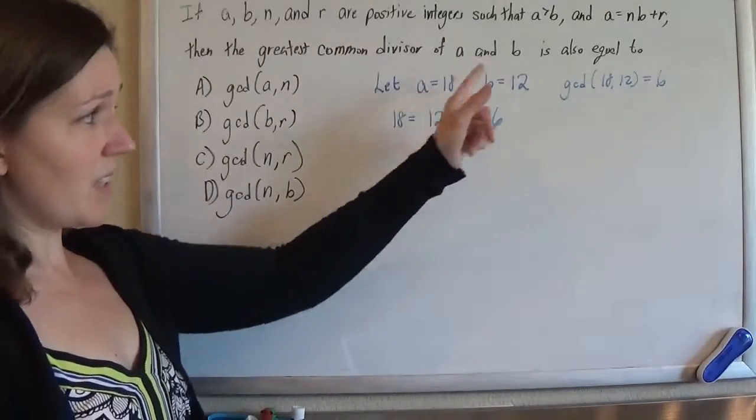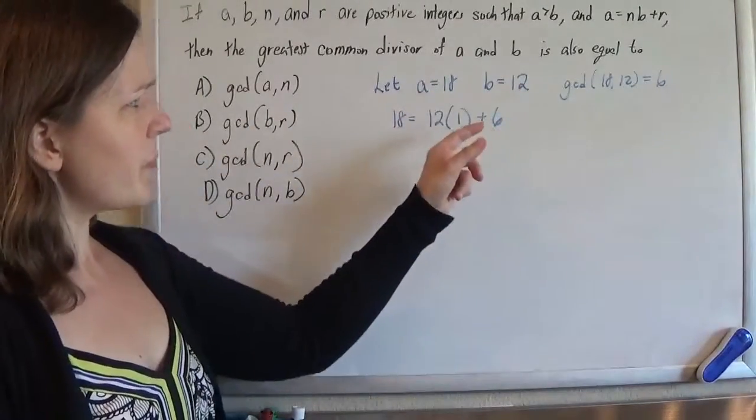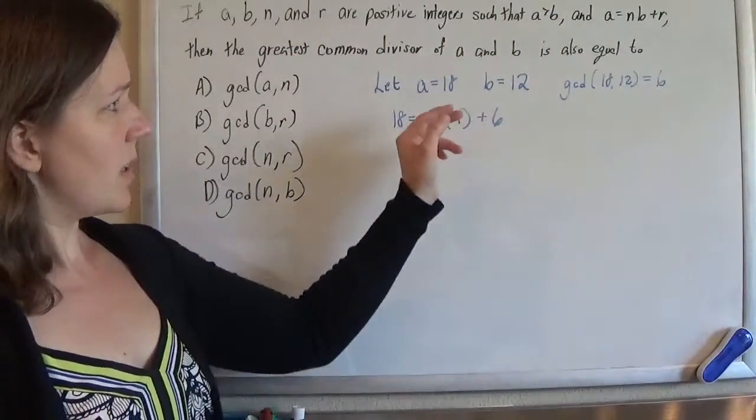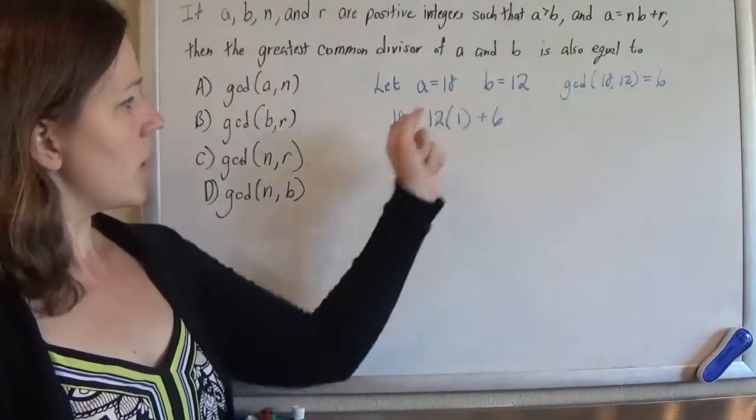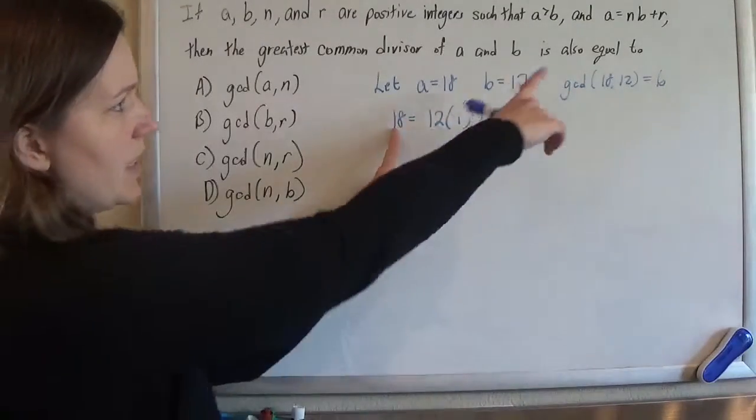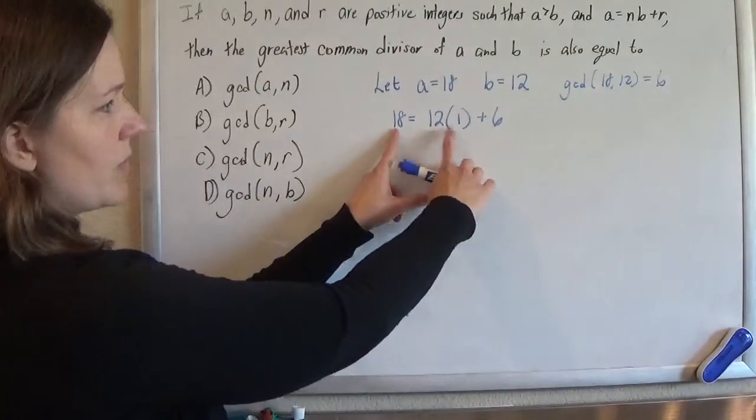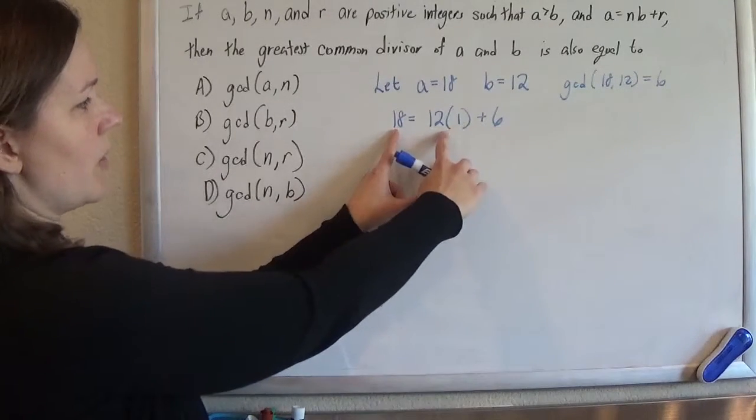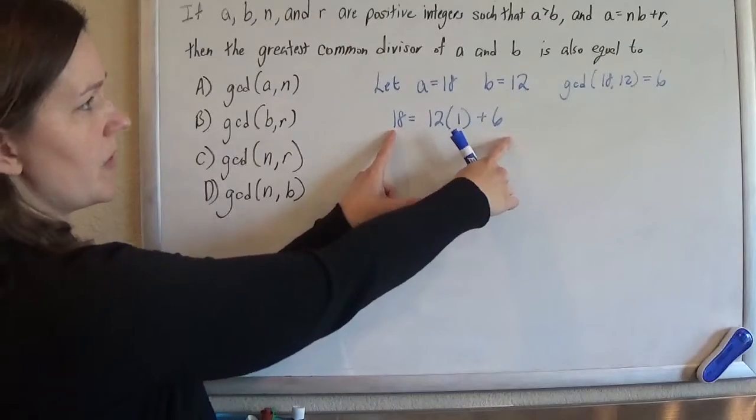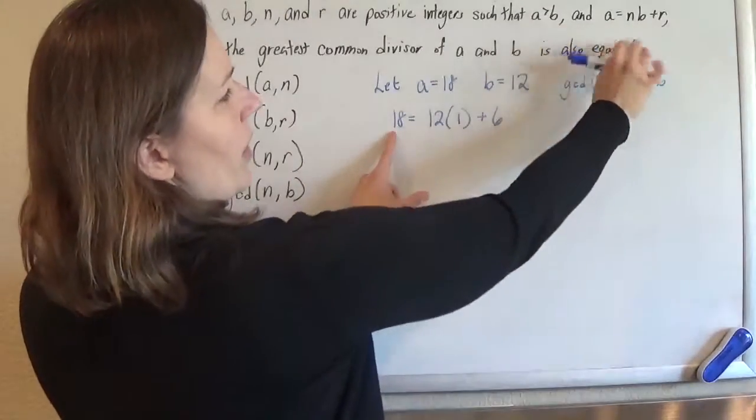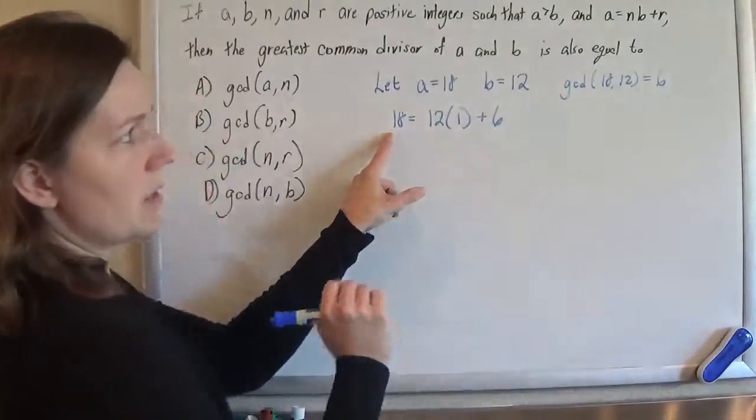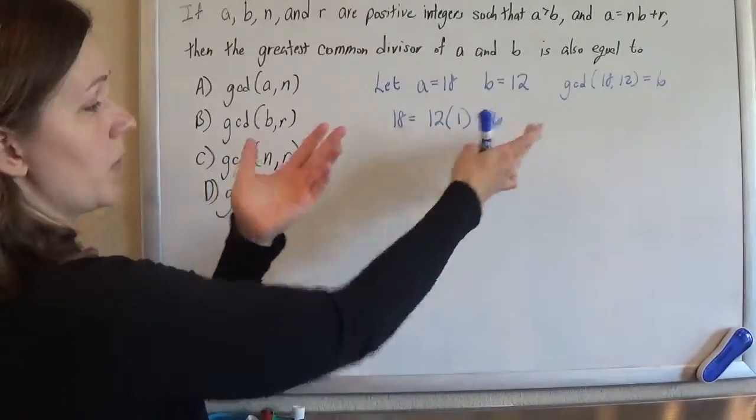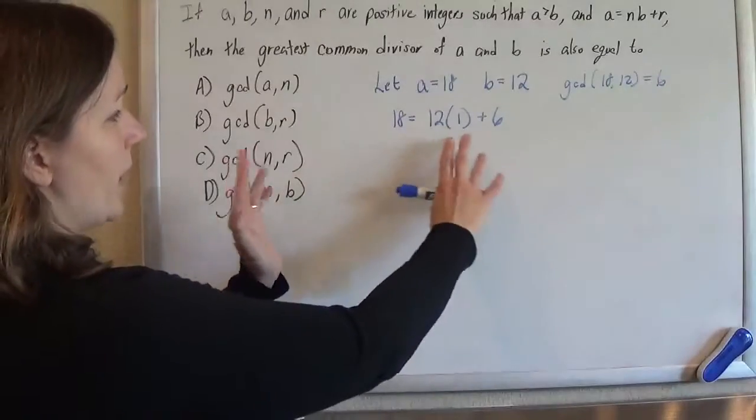I said let a be 18 and b be 12. And so they're positive integers such that a is greater than b. And so I can write 18 as 12 times, in this case 1, plus 6. So 12 goes into 18 once with a remainder of 6. So I've written it with our division rule there, as you can write any number. Something goes in with a remainder of whatever.